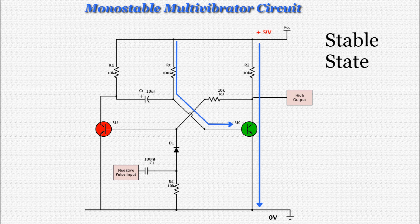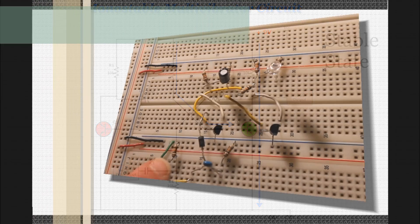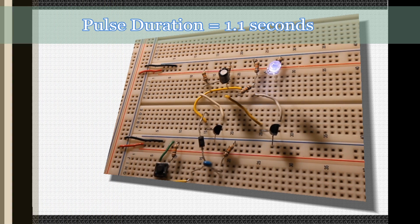With a timing capacitor size of 10uF and timing resistor size of 100k ohms, the duration of the output pulse should be about 1.1 seconds. If you've wired the circuit correctly, your results should match what you're seeing on screen.